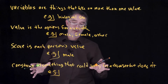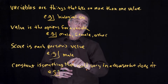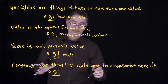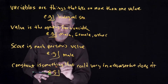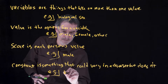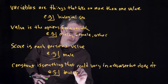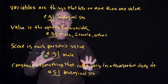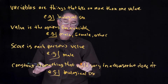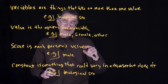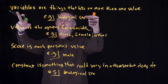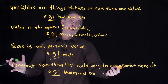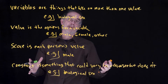For example, if I am doing a research study and I only recruit males to my study, then biological sex, in that scenario, is a constant. Notice that biological sex can be a variable or a constant in a particular data set, depending on how the researcher does things.